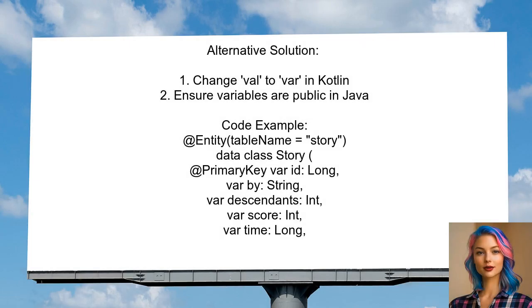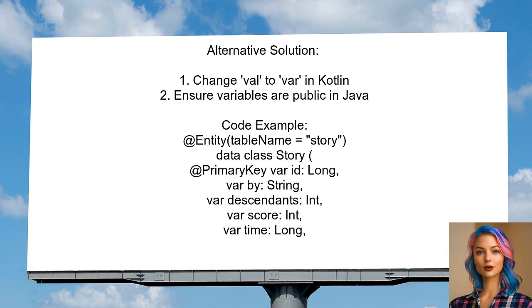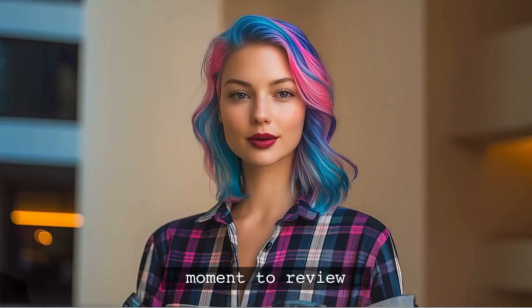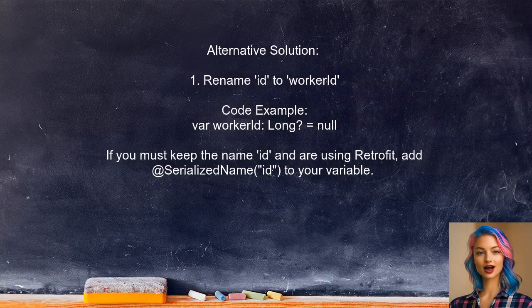Another solution suggests making the variables mutable — change val to var in your Kotlin data class. This allows Room to find the necessary setters. If you're using Java, ensure that your variables are public instead of private. Additionally, one user found that renaming the ID variable to something else, like workerID, resolved the issue.